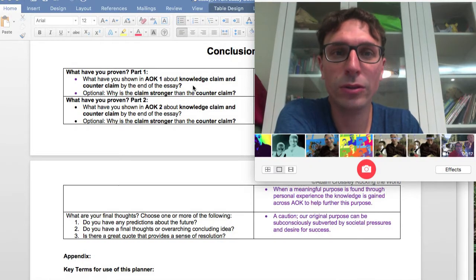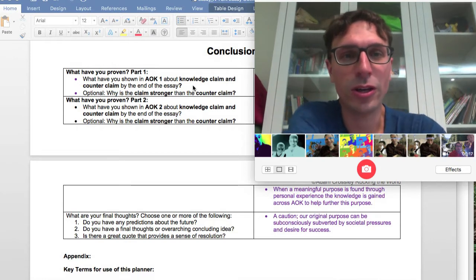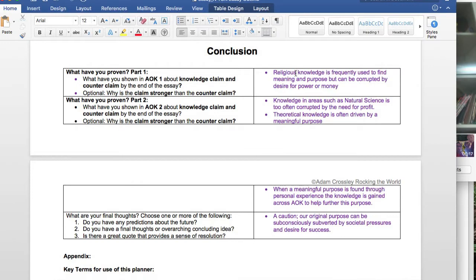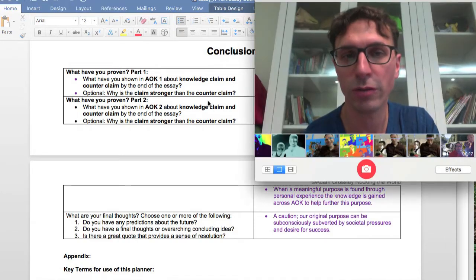And now we're at the conclusion. You've read over it, and you can see that it's a very solid, strong conclusion. It restates some of the main points and ends with a wonderful point about how original purpose can be subconsciously subverted by societal pressures and desire for success. And they say they worry about their own being possibly influenced by themselves, which is a very personal and really strong way to end it.